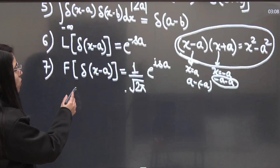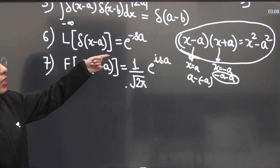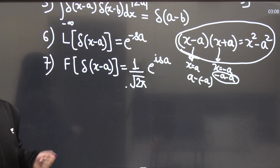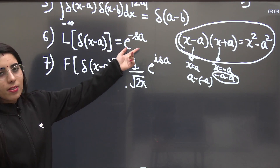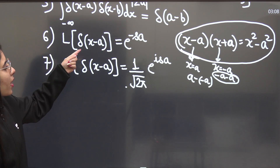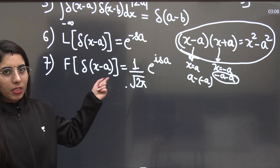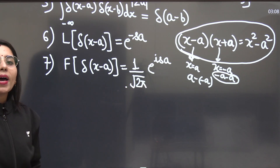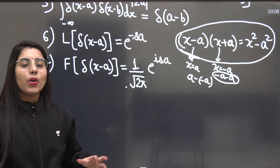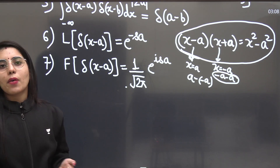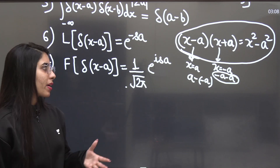If you are finding the Laplace transform of the Dirac delta function given in the form δ(x−a), note that a can be 0 as well. If a = 0, you write 0 in place of a; otherwise replace it accordingly. Similarly, the Fourier transform of the Dirac delta function has a standard form. By memorizing these expressions, you can quickly answer such questions in exams and save time without going through the full detailed process.